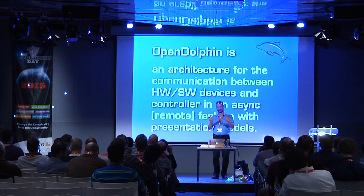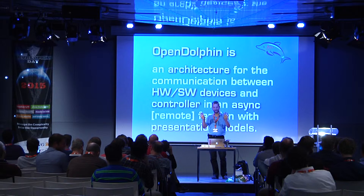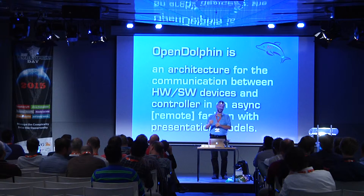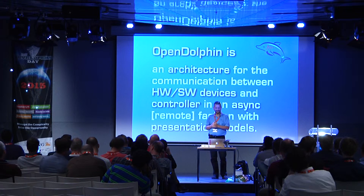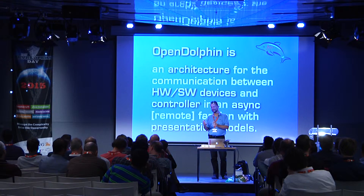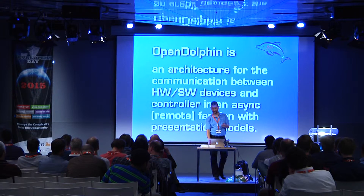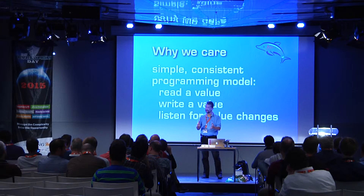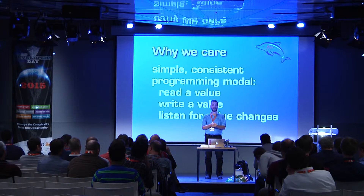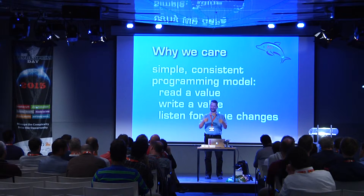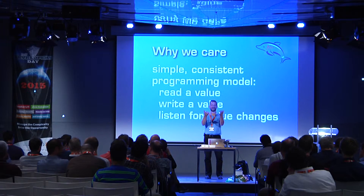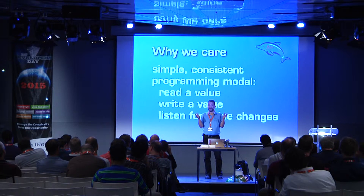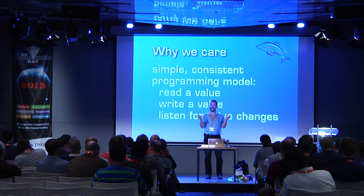OpenDolphin is an architecture. It cares for the communication and synchronization between client and server. It's totally asynchronous. And it's also an implementation — there are implementations for Java and for JavaScript. We like our open source implementations and think they're highly efficient. But it is not so much about the implementation; it is about the architecture. One could think of many more implementations. The programming model is extremely simple, and simple scales. As an application programmer, there's a presentation model: you can read a value, write a value, listen for value changes. That's all there is — nothing else. Those are your building blocks, and everything else is on top of that.